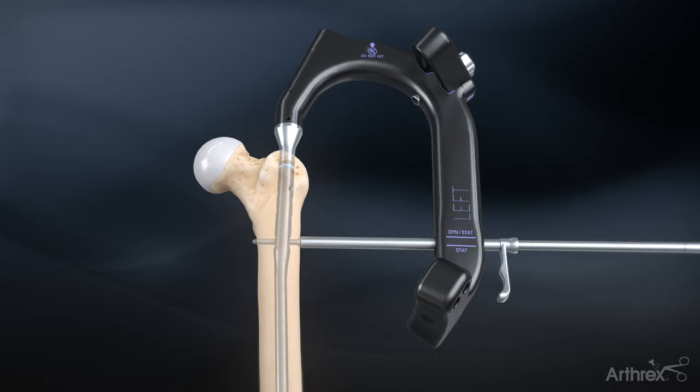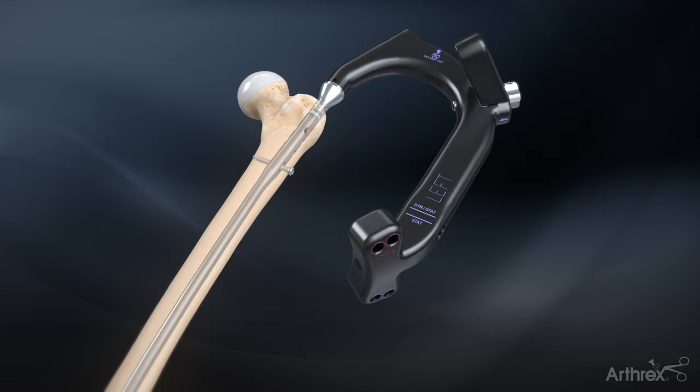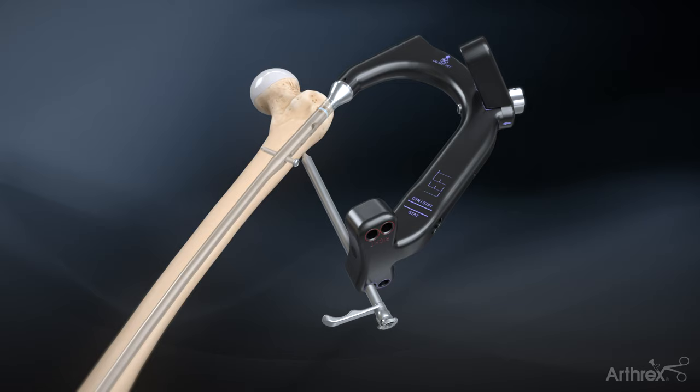The sheath is removed and the reassembled screw sheath pin guide and obturator assembly is slid through the distal hole on the targeting guide. Remove the obturator and insert the 3.2 mm guide pin through the guide and into the femoral head.